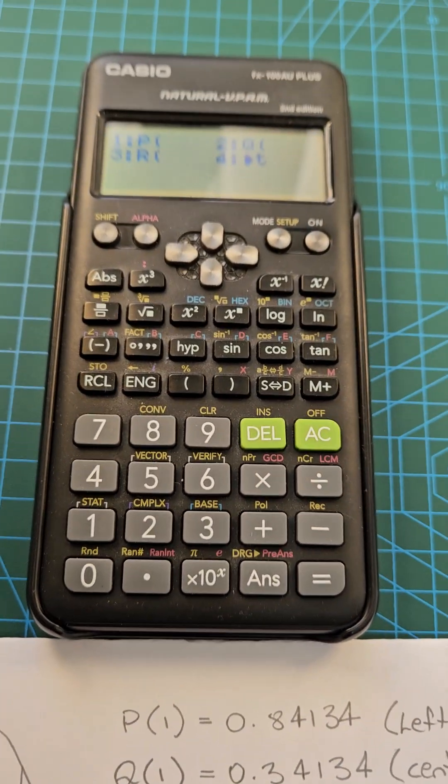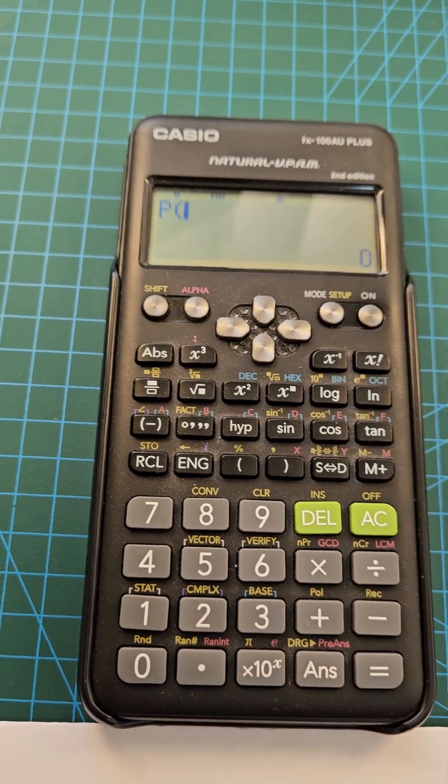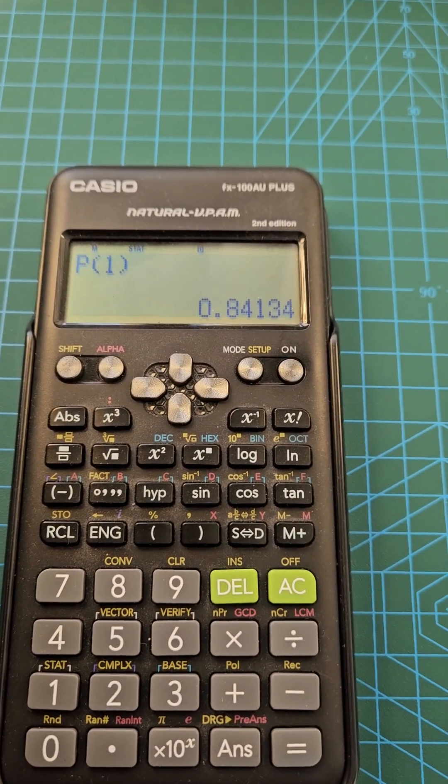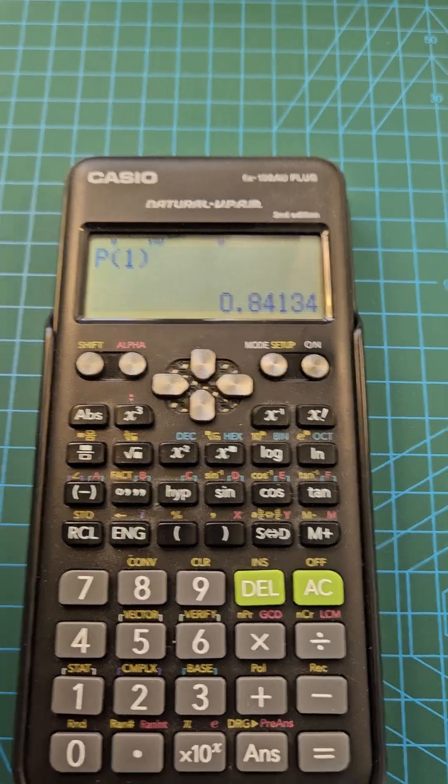So typing that into the calculator, if we press one and then one again, close brackets, equals 0.84134.